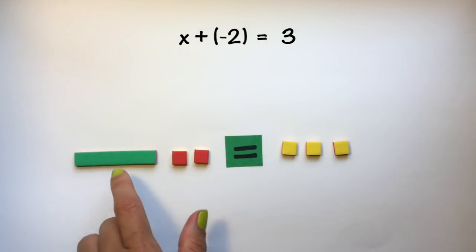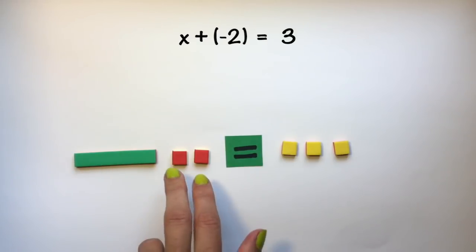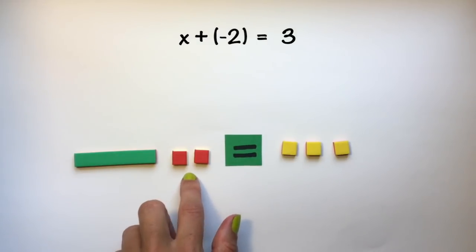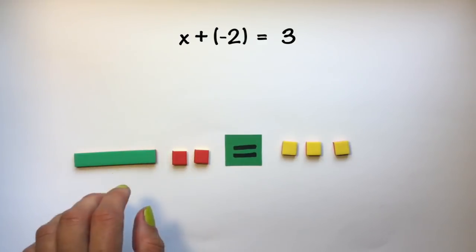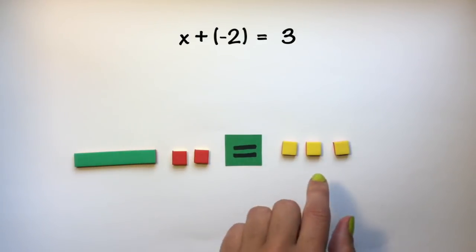Now again, my goal is to isolate my variable, so I want to get x by itself. In order to do so, I'm going to have to remove two negative tiles from this side of my equation. I don't have any negative tiles over here to subtract, so I'm going to add in zero pairs.